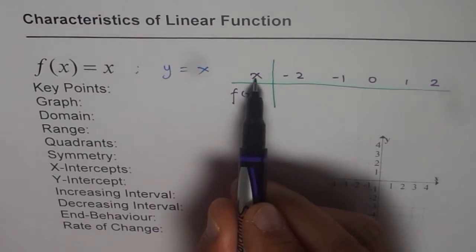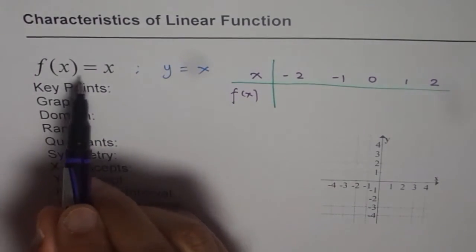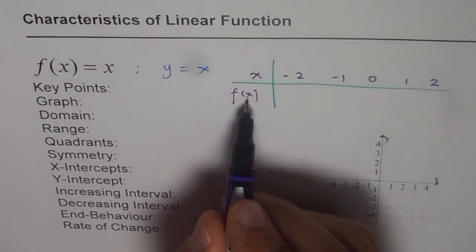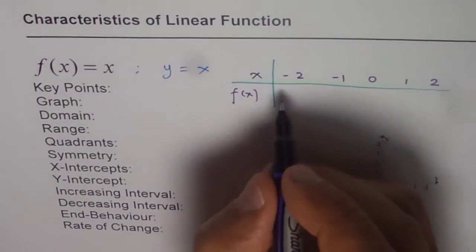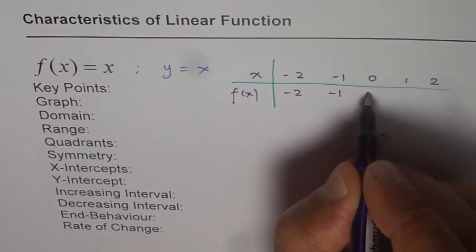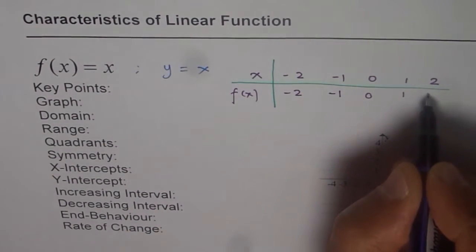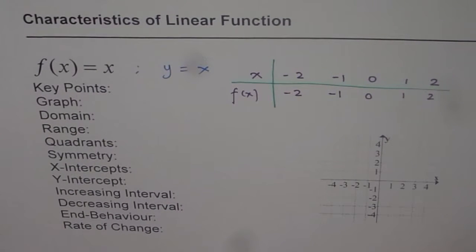So f of x is the same as x. When we say y equals to x or f of x equals to x, the value of f of x is the same as x. So we get the pairs: (minus 2, minus 2), (minus 1, minus 1), (0, 0), (1, 1), and (2, 2). These are our five key points. Joining these five points, we get the linear function. Let us plot them on the graph.